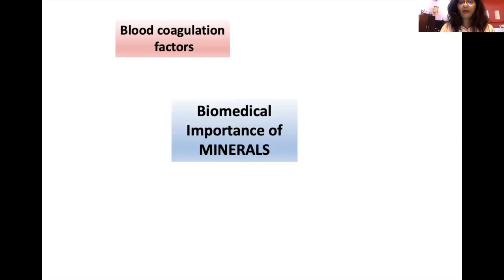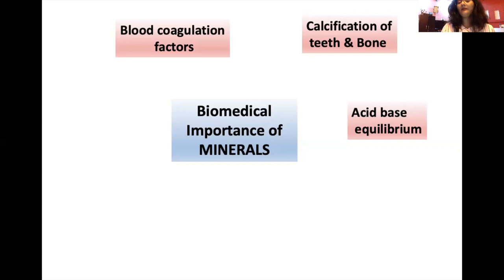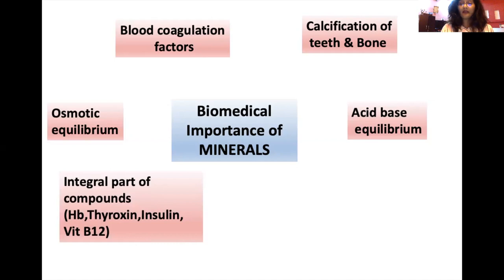Minerals perform different functions: they help in blood coagulation, calcification of teeth and bone, and they maintain acid-base equilibrium — like sodium, potassium, and calcium. They also maintain osmotic equilibrium. A few minerals form an integral part of important compounds like hemoglobin, thyroxine, insulin, and vitamin B12.